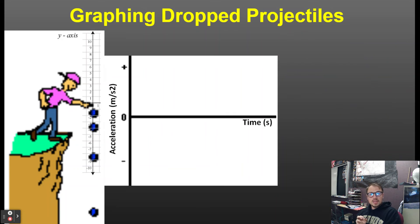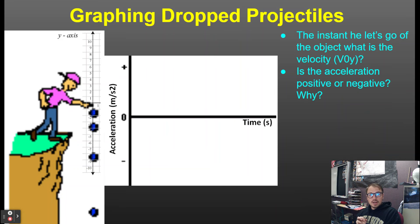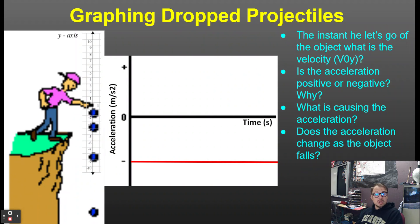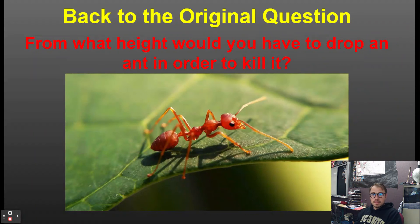The slope of the velocity-time graph equals the acceleration, and if I graph acceleration versus time, it won't change — it's a constant negative number: negative 10 meters per second squared, which is the acceleration of all objects on Earth.